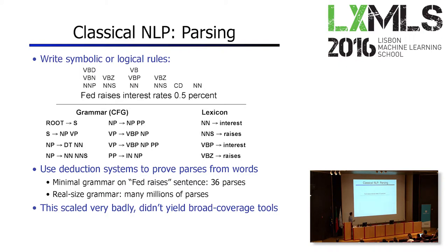If we look at the short sentence 'Fed raises interest rates 0.5%' and ask you to parse it, you probably know there's one meaning and you can figure out the structure. But if we look at each individual word and try to think of the part-of-speech tags it can take — noun, verb, tense of the verb — we'll see quickly that there are quite a few combinations possible for the computer. These are the possible interpretations for the grammatical functions of each word using the Penn Treebank tag set. NNP means proper noun, NNS is a plural common noun, VBZ is a third-person singular verb, VB is a base verb, and so on. Each word, depending on where it's used, can be used in a different way.